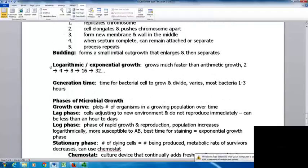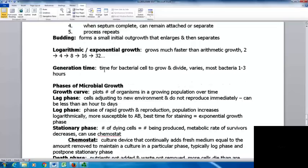In bacteria, we often see logarithmic or exponential growth - grows much faster than arithmetic growth. With logarithmic growth, we start with one organism becomes 2, 2 to 4, 4 to 8, 16 to 32, and so on. The generation time is the time for a bacterial cell to grow and divide. This varies with different bacteria. For most bacteria, this is usually between 1 and 3 hours.